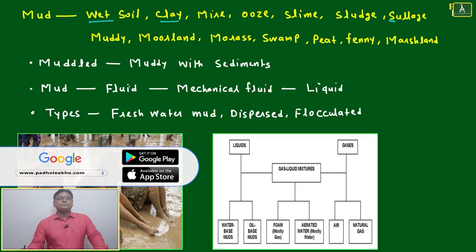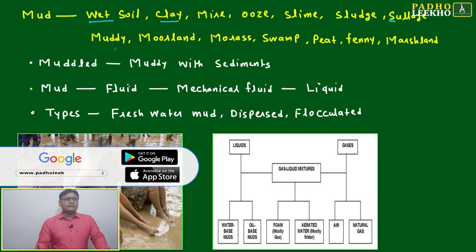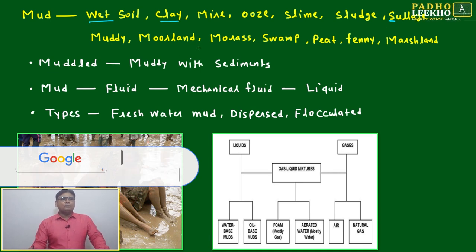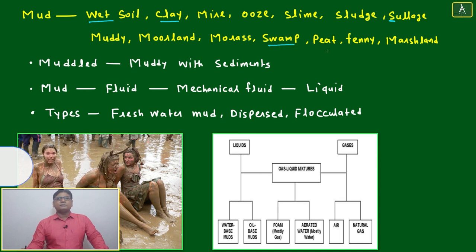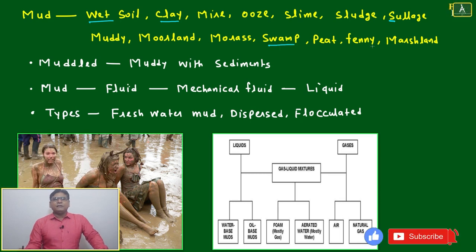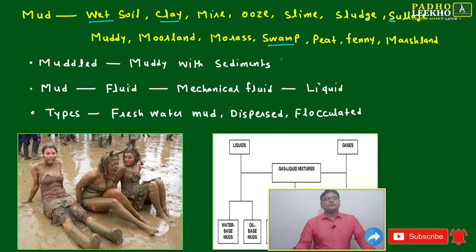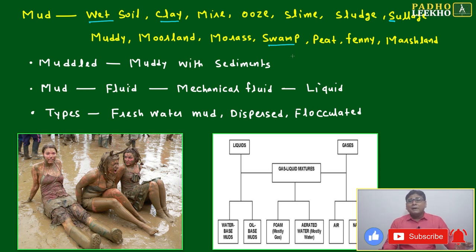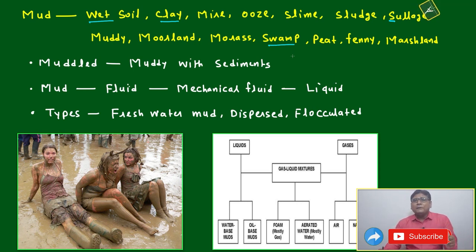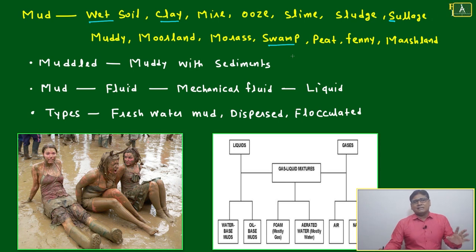After the mire, ooze, slime, sludge, and muddy moorland — these all are swamp. After then peat — finish all these. They are all related to mud or muddy area, wherever a combination of water and soil is existing.